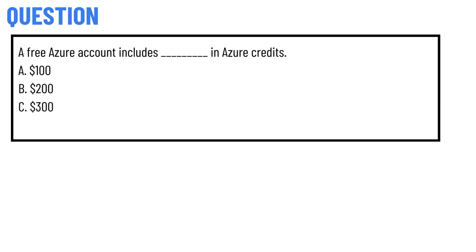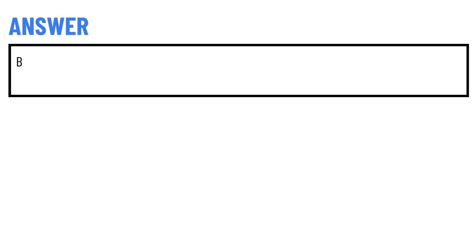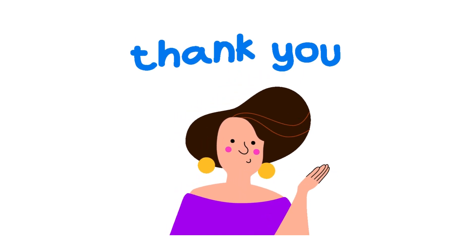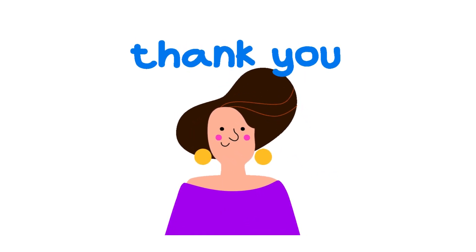A free Azure account includes how many Azure credits? Option A: $100, Option B: $200, Option C: $300. The correct answer is Option B — $200. That's the correct answer. If you have any questions, just leave a comment and I will be answering you as soon as I can.